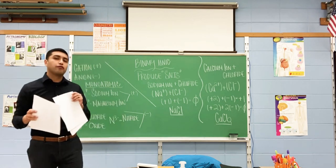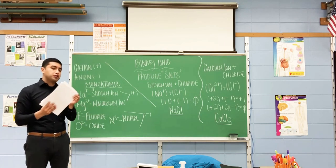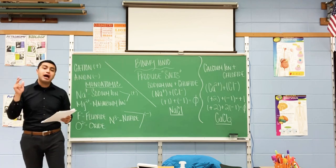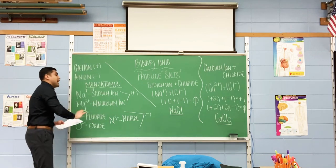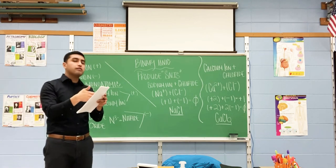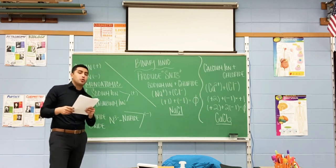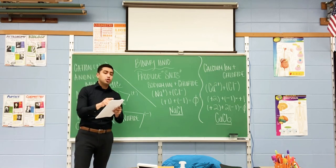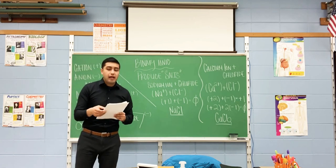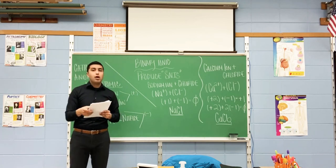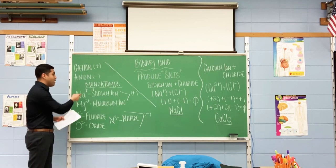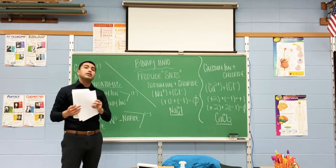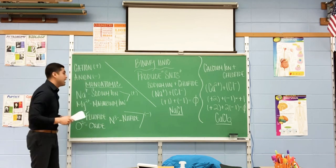If you look at your first worksheet, it's a long chart — it says monoatomic ions at the top. This is very, very simple. You have four rows: element name, element symbol, ion name, and ion formula. It gives you all of the element names. The first one is sodium. The symbol for sodium is Na — so where it says element symbol, put Na. Then for ion name, you put sodium ion, because it's positive. Positive means it's just the element name plus ion. All positives just add 'ion' to the end.